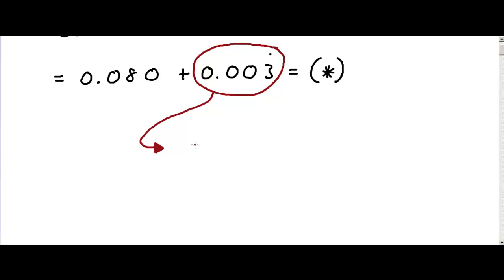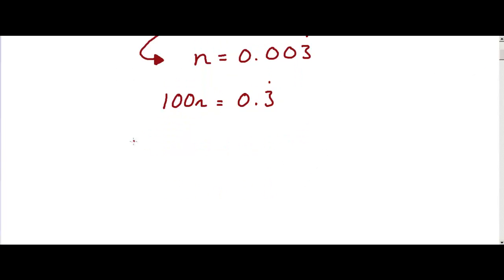Let's say that n is 0.003 recurring. If this is the case, 100n is 0.3 recurring. And if this is the case, 1000n is 3.3 recurring.